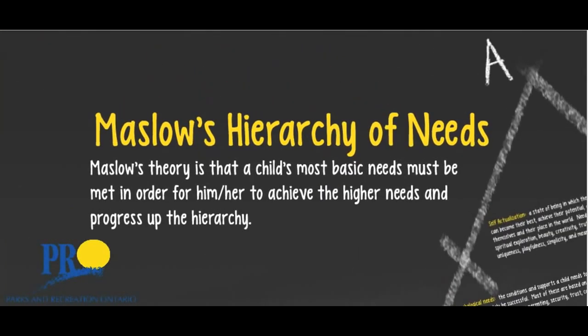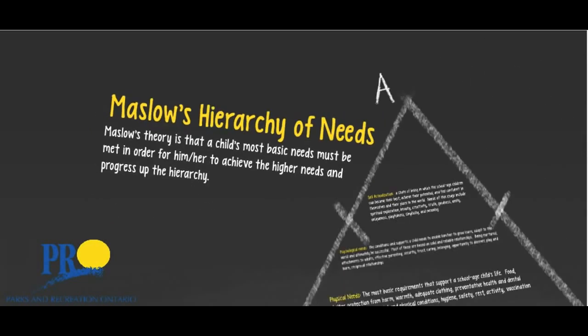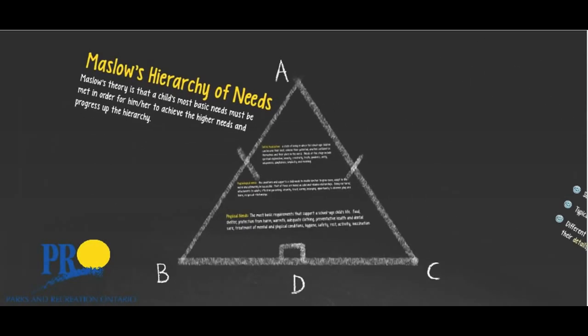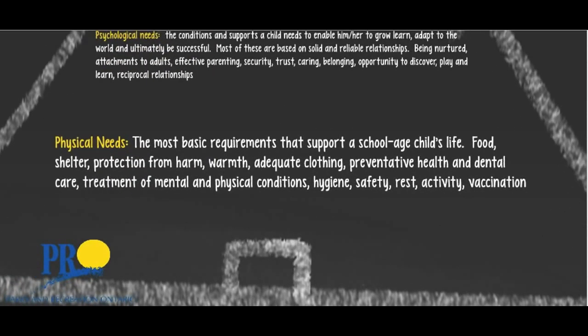Maslow's theory is that a child's most basic needs must be met in order for him or her to achieve the higher needs and progress up the hierarchy. This diagram demonstrates Maslow's theory. Physical needs are the most basic requirements that support a school-aged child's life: food, shelter, protection from harm, warmth, adequate clothing, preventative health and dental care, treatment of mental and physical conditions, hygiene, safety, rest, activity, and vaccination.